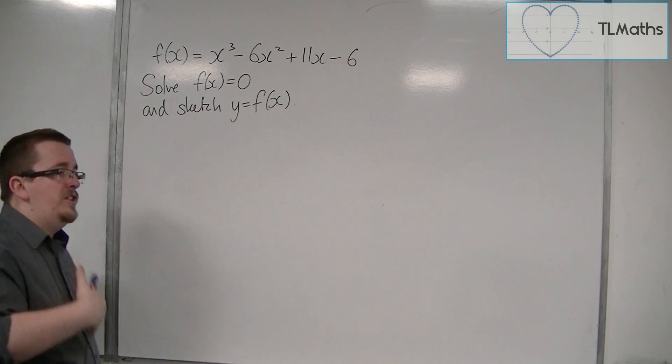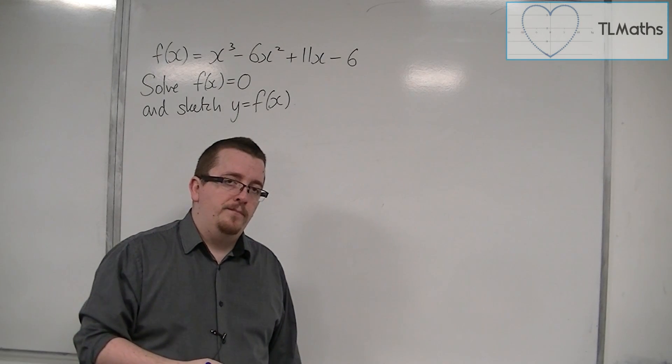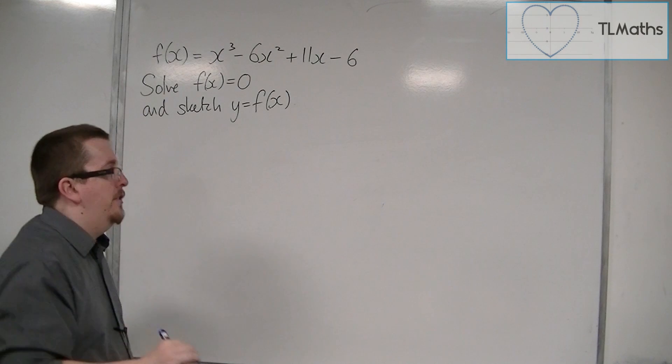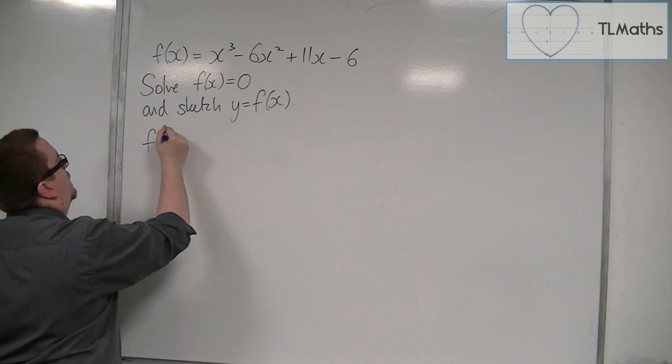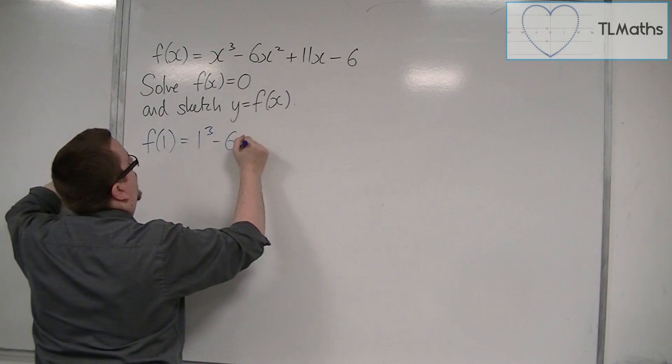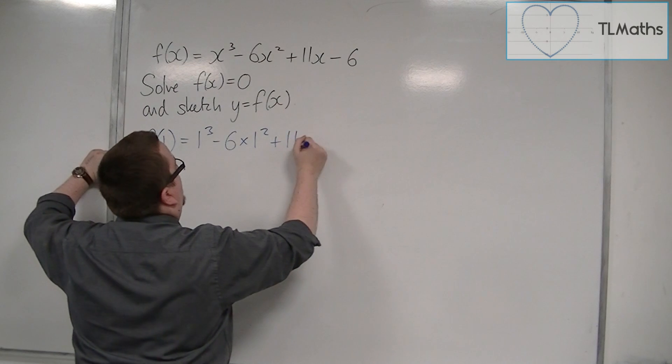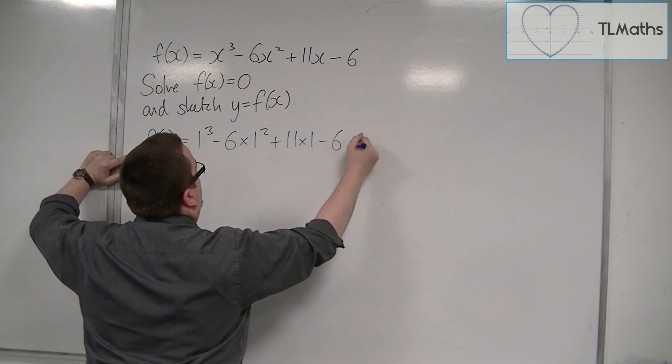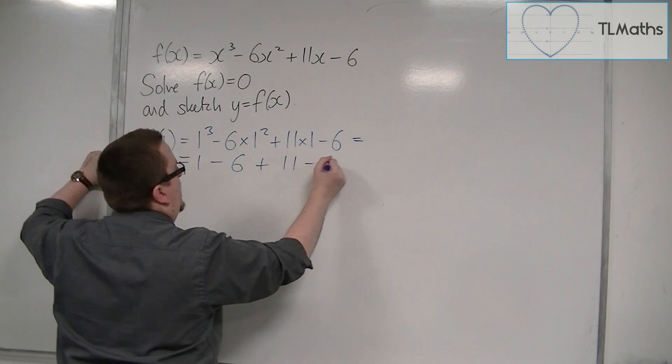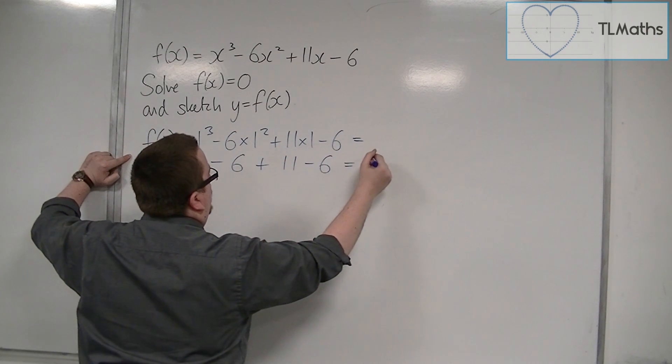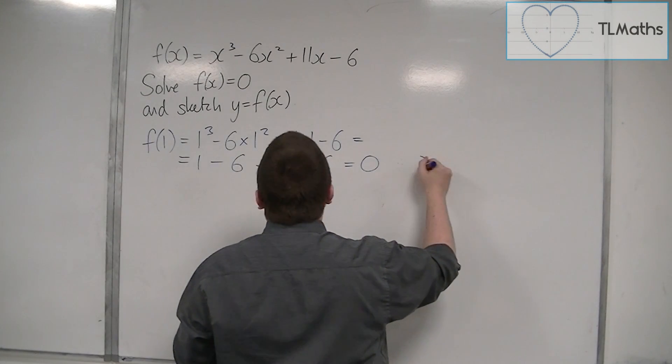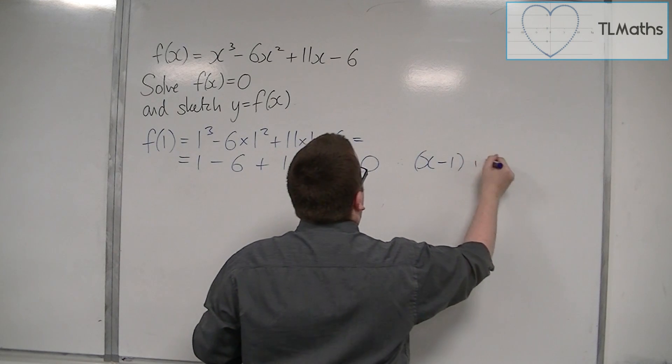Now what I'm going to do is use the factor theorem. So in the first video on the factor theorem, we looked at f of 1. And what we get is 1 cubed take away 6 lots of 1 squared plus 11 lots of 1 take away 6. That's 1 take away 6 plus 11 take away 6, which is equal to 0. So therefore x minus 1 is a factor.